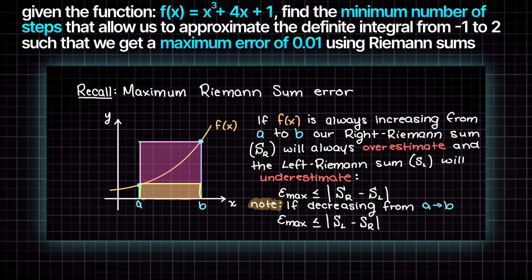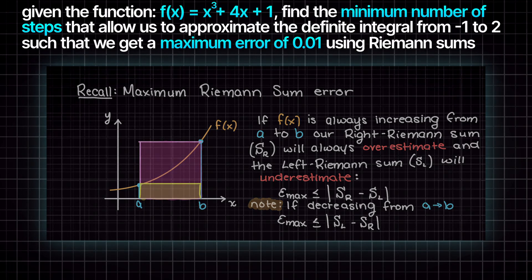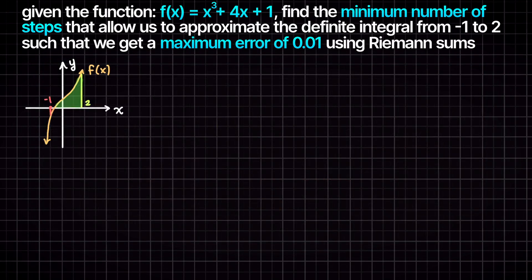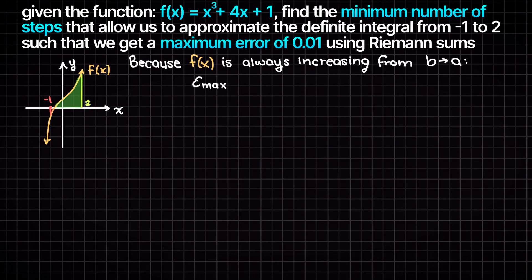We also have these equations if our function is monotonically decreasing as well. So let's quickly draw out our function and see what it looks like. As you can see, within our integral bounds our function is always increasing, and therefore we will use this set of equations to solve our problem.